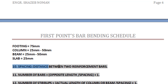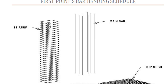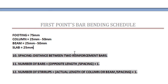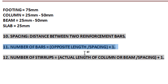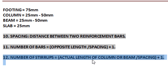Spacing is the distance between two reinforcement bars — between two stirrups, two x-bars, or two y-bars. To find the number of bars in any direction, the formula is: opposite length / spacing + 1. For example, for x-bars, take y-length / spacing + 1. The number of stirrups formula is: actual length of column or beam / spacing + 1. This concludes the topic; if you have any doubts, write in the comment section. Thank you.